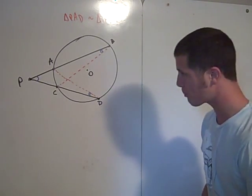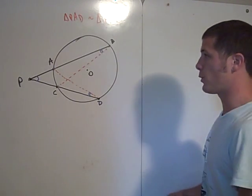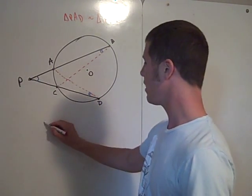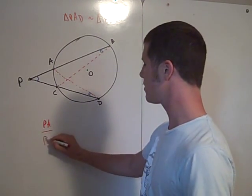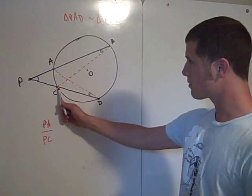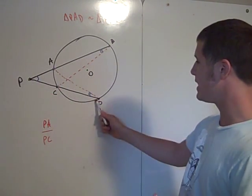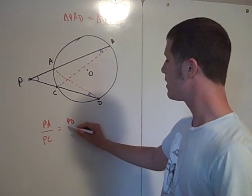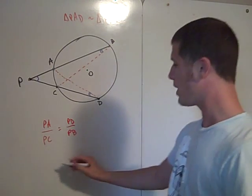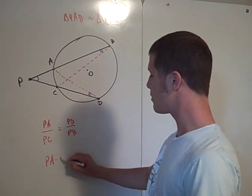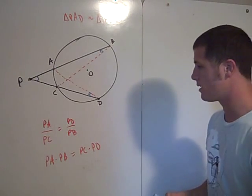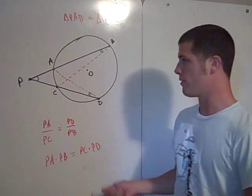Now we have angle-angle similarity between these two triangles. So, then you can write a proportion. You can say that PA is to PC, PA is to PC, as PD, as PD is to PB. So, then you can cross-multiply PA times PB equals to PC times PD. That's the power of the point P.